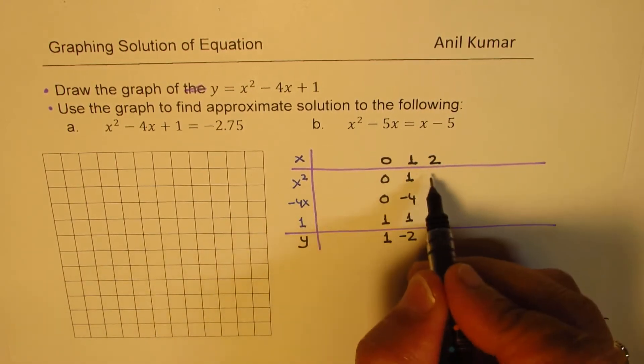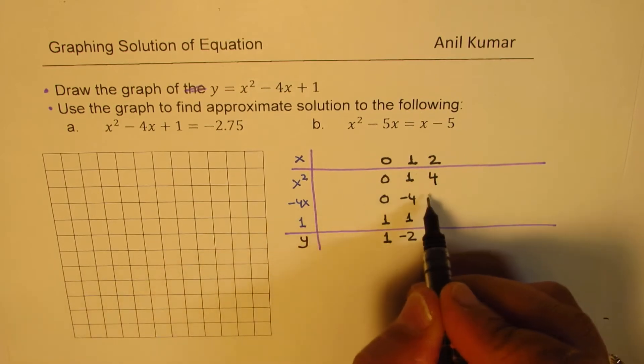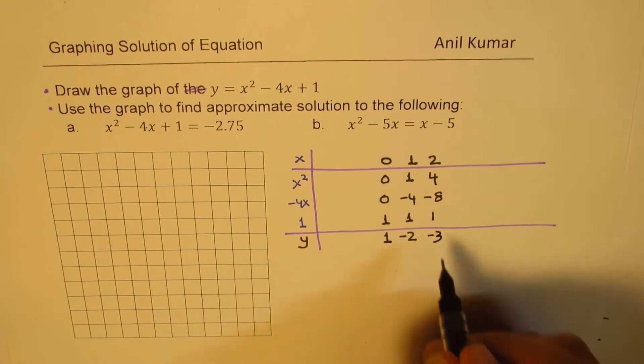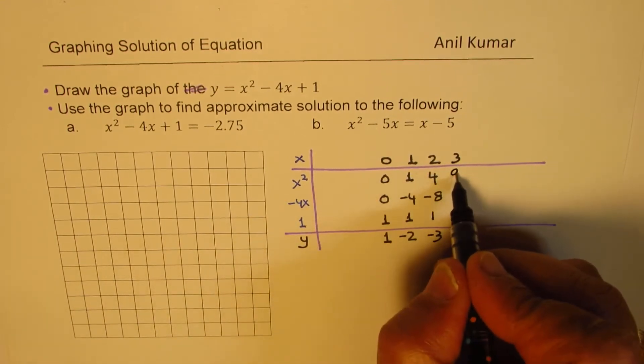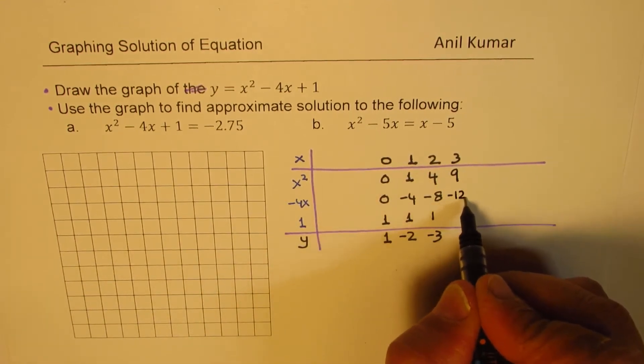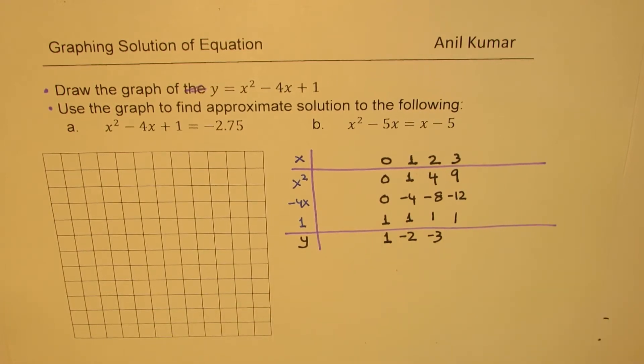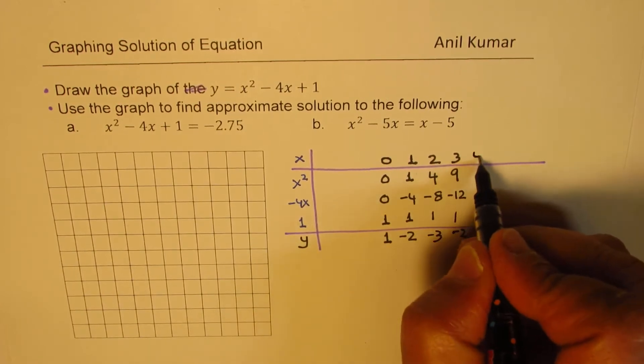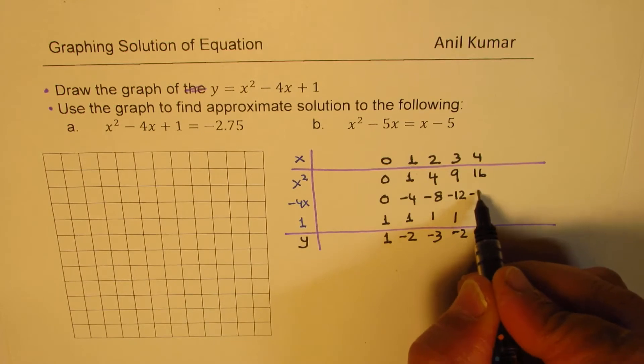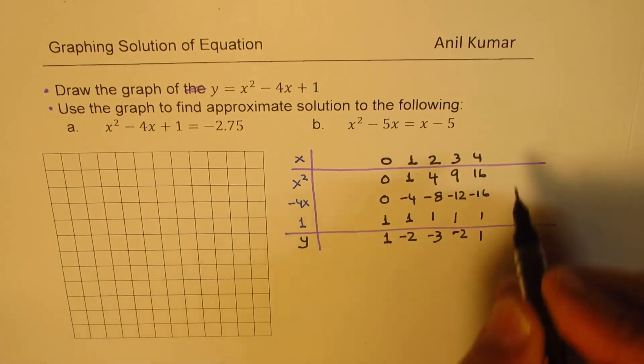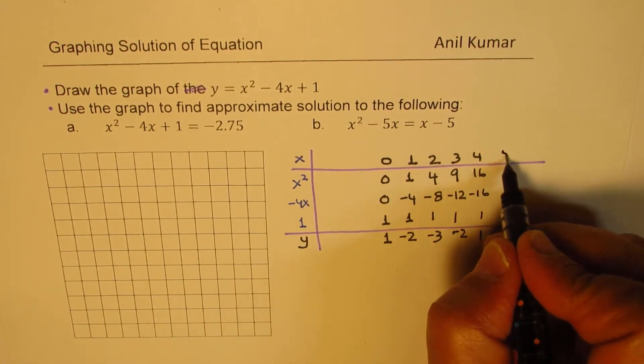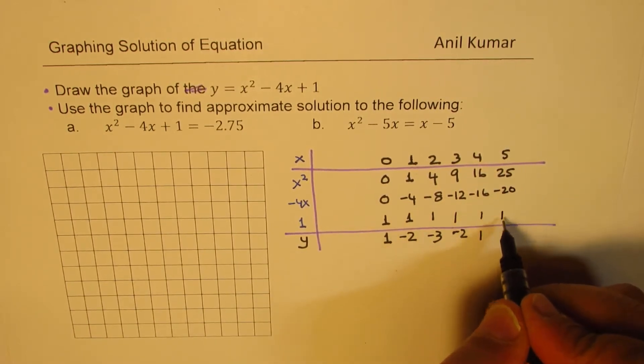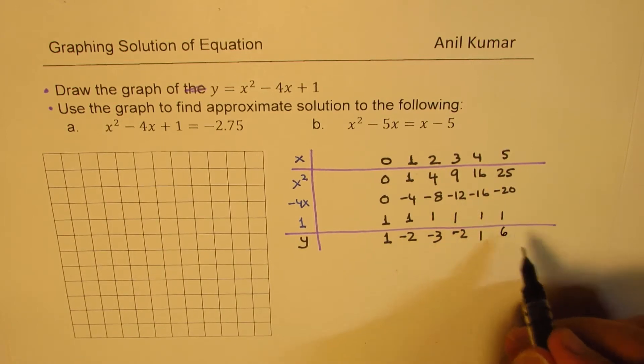For x equals 2, square will be plus 4 minus 8. This will be always 1. So we get minus 3 here. For x equals 3, square is 9 minus 12, this is always 1. So 12 minus 12 take away 10 will be minus 2. For 4, we'll have square as 16, minus 16, and 1 will give us 1. And then for 5, we'll have 25 here, minus 20, and 1. So that gives us 5 and 1, 6.